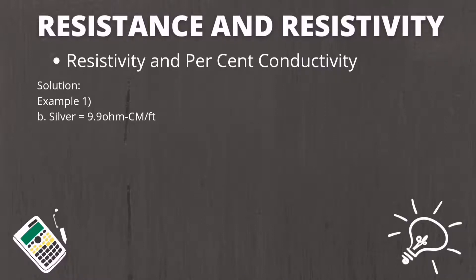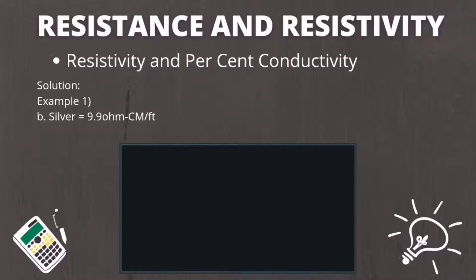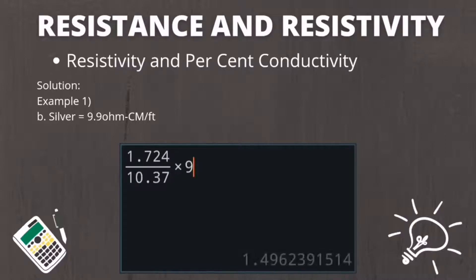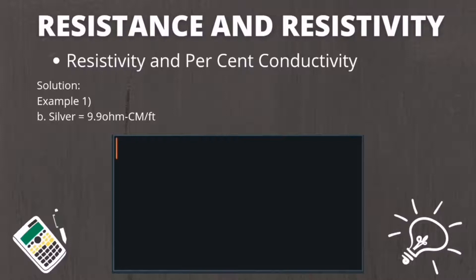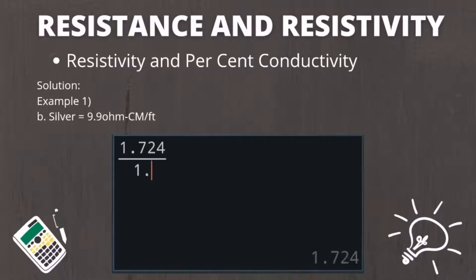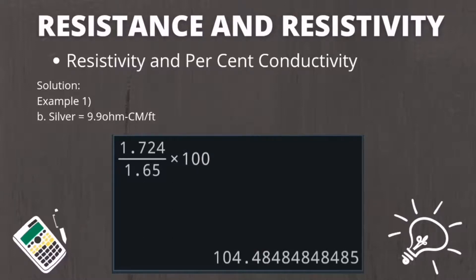For Example 1b, silver has a resistivity of 9.9 ohm circular mil over feet. The solution is: 1.724 divided by 10.37 times 9.9, giving 1.65 micro ohm centimeter. The percent conductivity is solved by 1.724 divided by 1.65 times 100, which results in 104.5 percent conductivity.